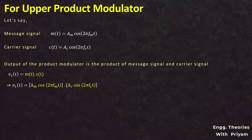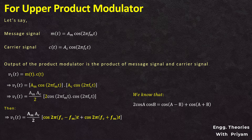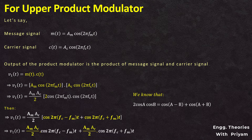Dividing and multiplying by 2 and applying the formula 2·cosA·cosB = cos(A−B) + cos(A+B), V1(t) becomes: V1(t) = (AM·AC/2)·cos(2π(fC−fM)t) + (AM·AC/2)·cos(2π(fC+fM)t). This V1(t) is the output of the upper product modulator and is given as input to the summer block.